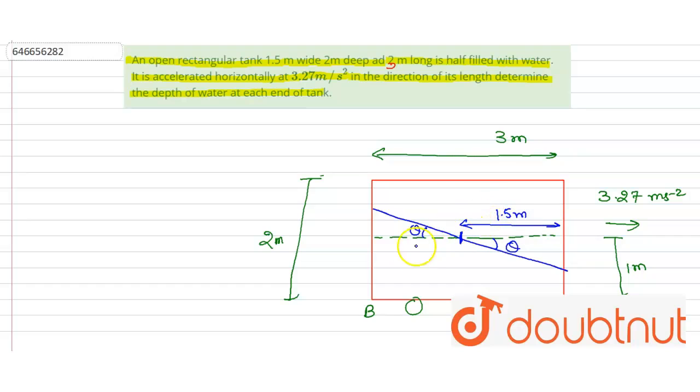Now we have to find the depth at point A and point B. So first of all, what is the angle? tan theta equal to a by g, and this will be equal to 3.27 divided by 9.8, and tan theta will come out 1 by 3.